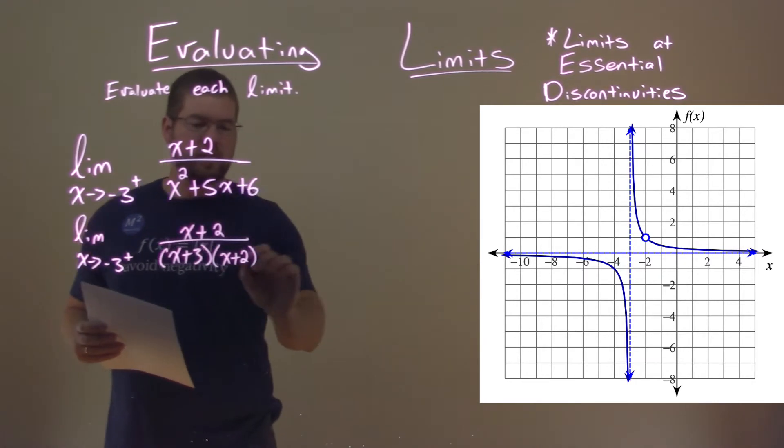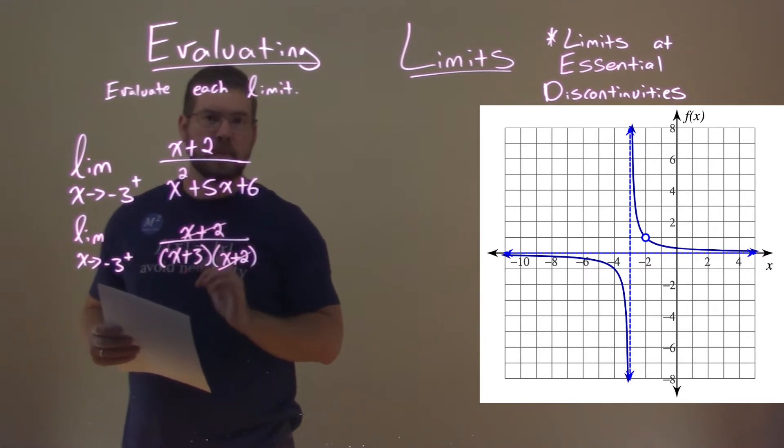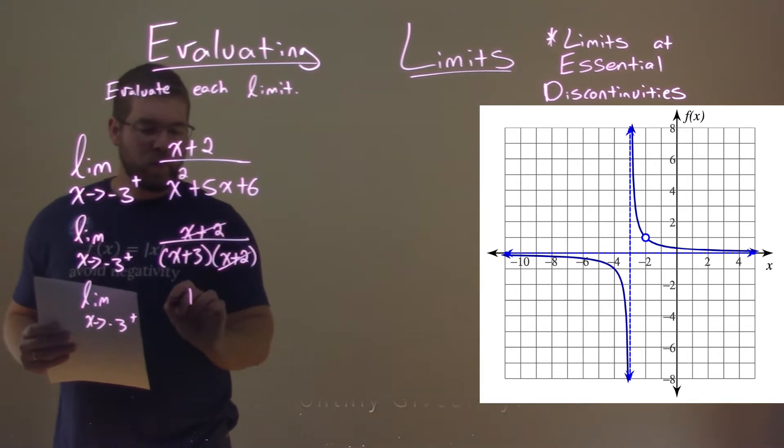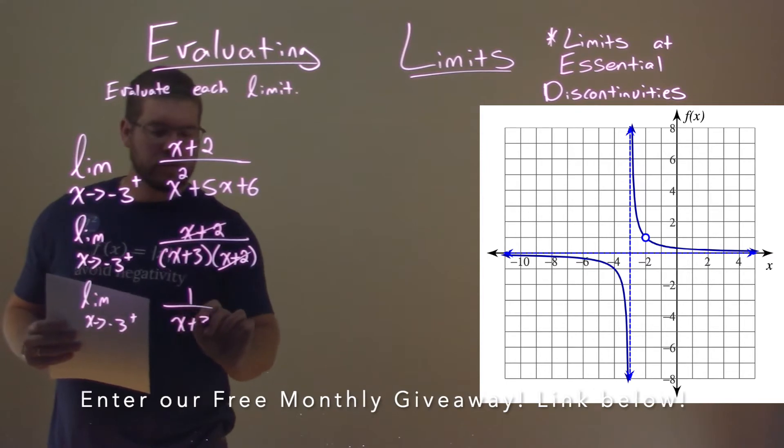Notice that the x plus 2s will cancel. So this limit, as x approaches negative 3 from the right, can be written as 1 over x plus 3.